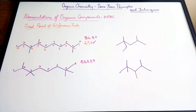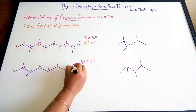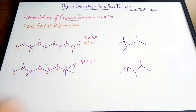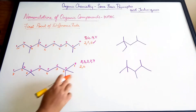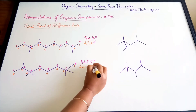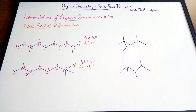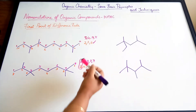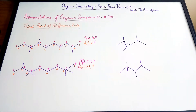Going right to left, the second carbon is substituted twice, the sixth carbon is substituted twice, and the seventh carbon is substituted once. The first point of difference rule says we consider the first position where there is a difference. In both directions the number two appears first — that's the same, so it's not the first point of difference. However, the next number is three in one direction and two in the other, and since two is less than three, that numbering is correct.